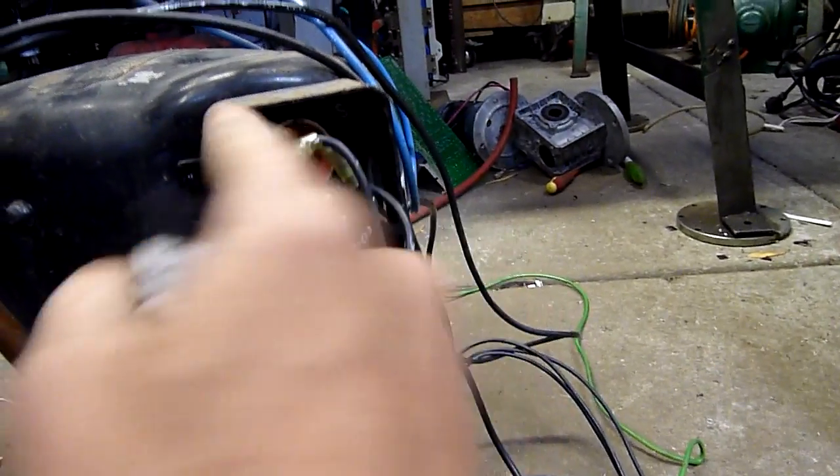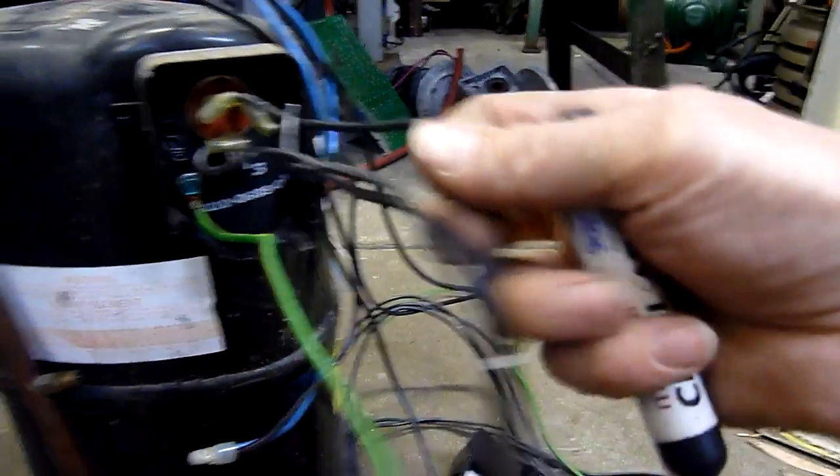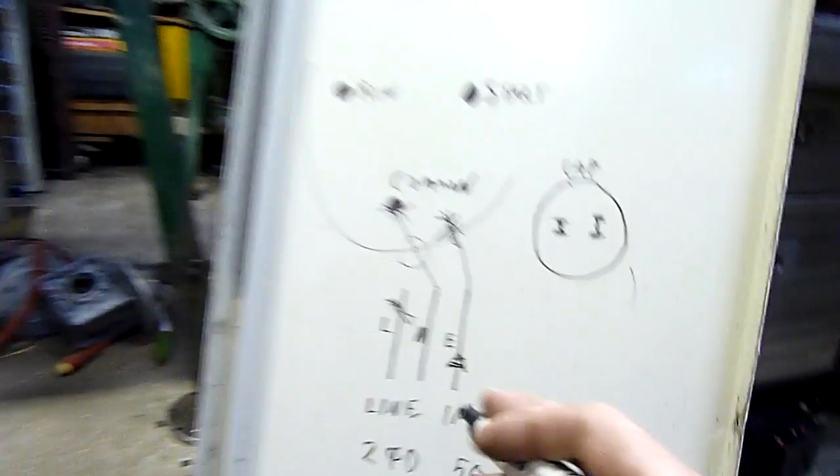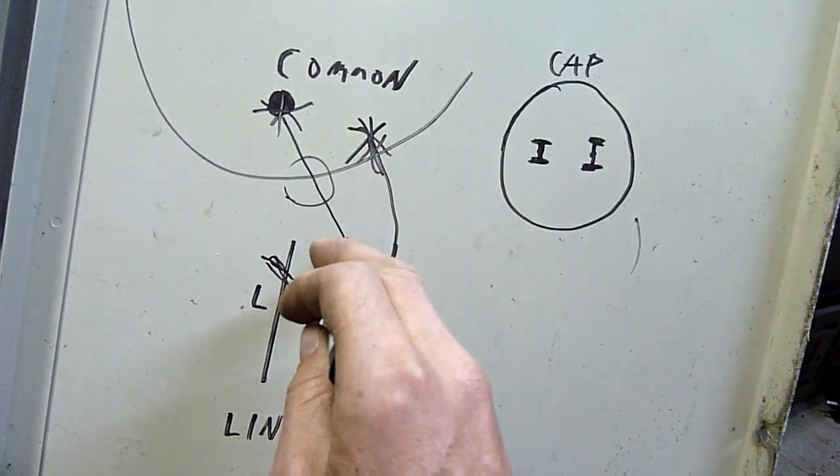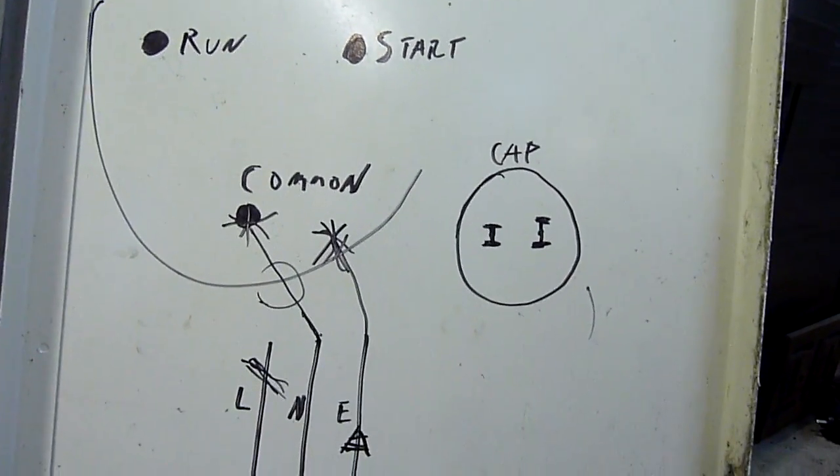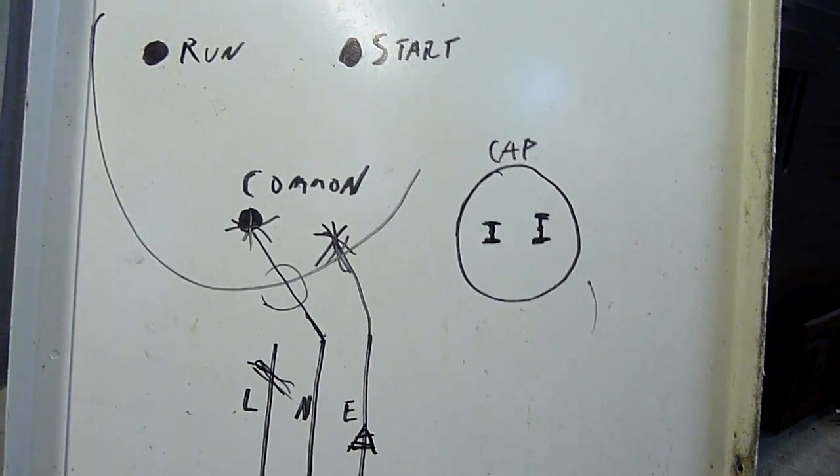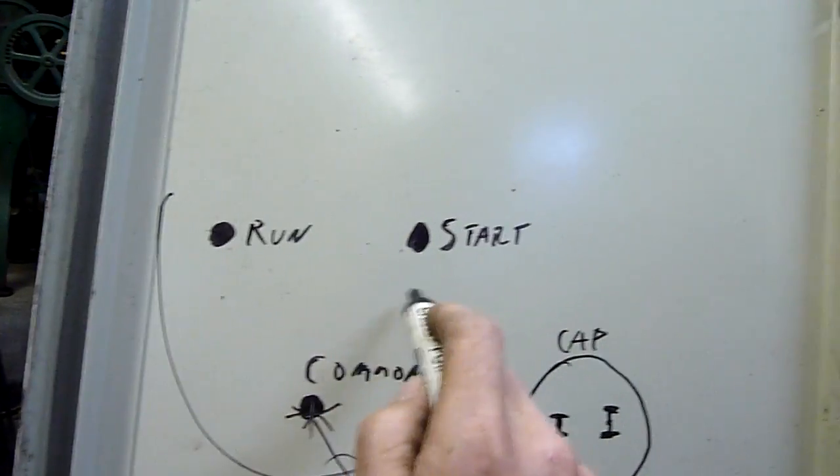In this case, it is this pin here. So that would go to one side of - sorry, not one side of the capacitor - one side of line. But we have to look at the capacitor for running the compressor because you've still got two other terminals to go to.